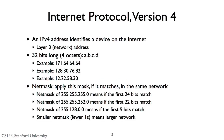An Internet Protocol version 4 address is 32 bits long. These 32 bits are often written as four octets — that is, four 8-bit values — in the form a.b.c.d. Here are three examples: 171.64.64.64, 128.30.76.82, and 12.22.58.30. Every device connected through IPv4 has an IPv4 address, and the IP layer delivers packets whose destination is this address to that device.